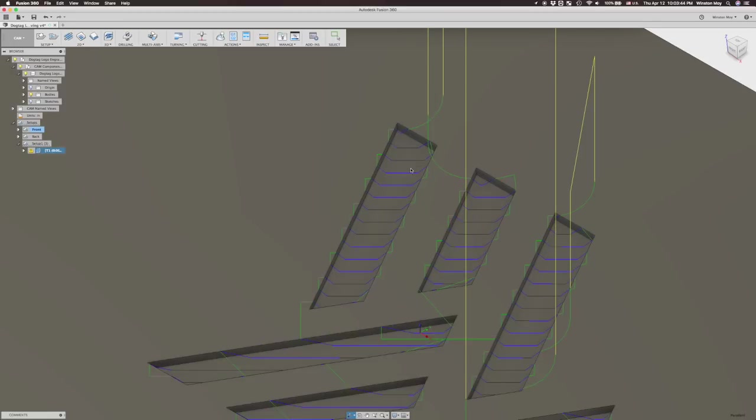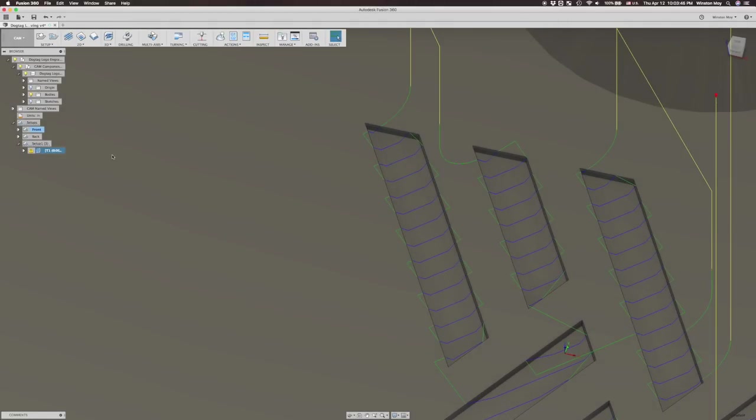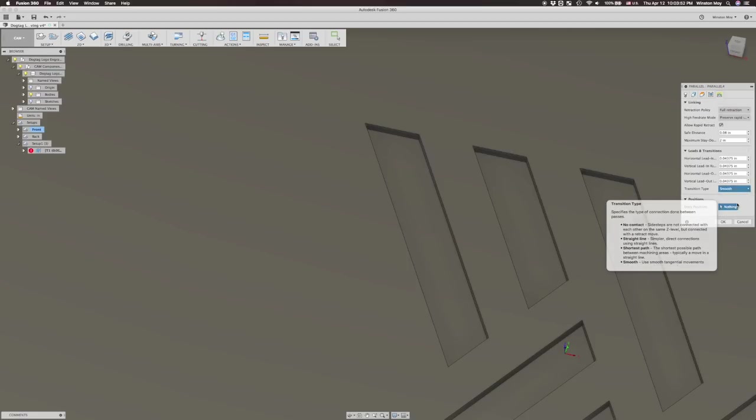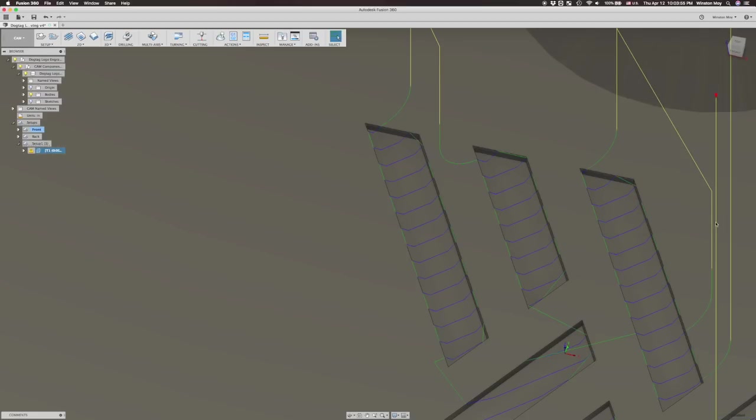Now, if you just click OK, you'll see that the resulting toolpath isn't ideal. The transitions between segments spill beyond your contours. You'll need to go to the linking tab in the toolpath options and change transitions to straight. Much better.